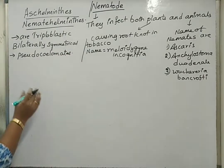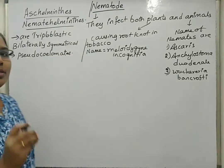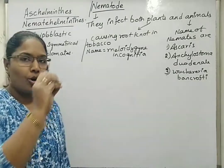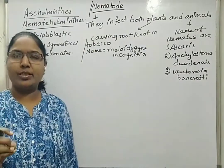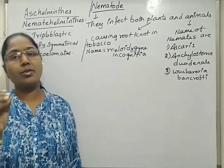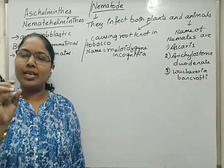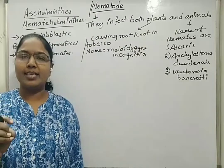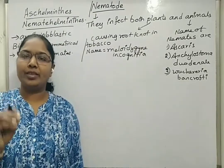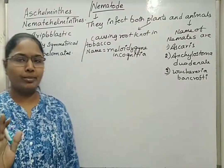They have a digestive system like a long tube-like structure. Their body is also a long tube-like structure. So their body plan is described as a tube-within-tube body plan.